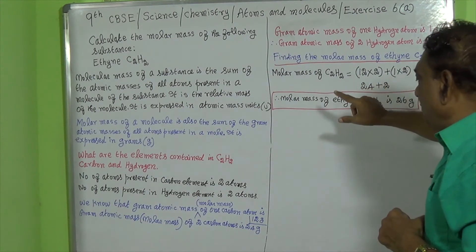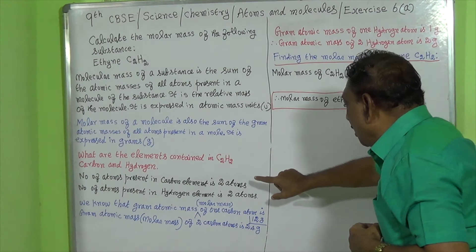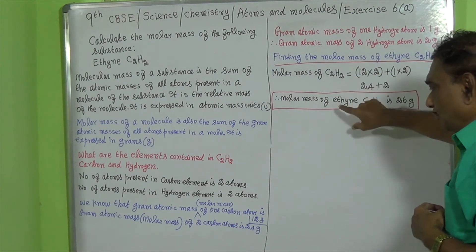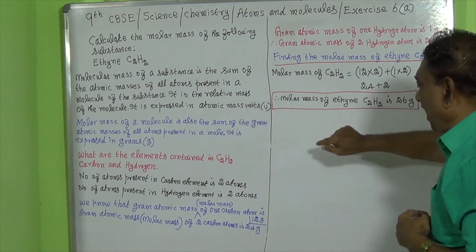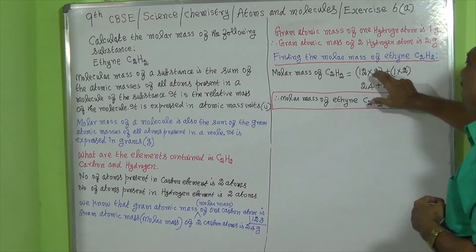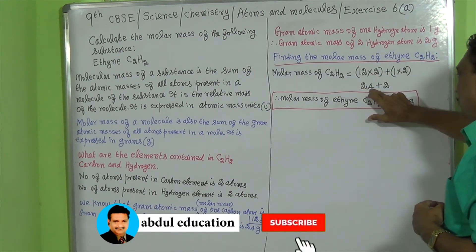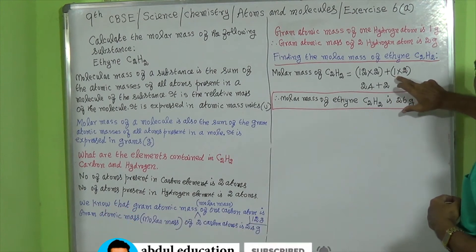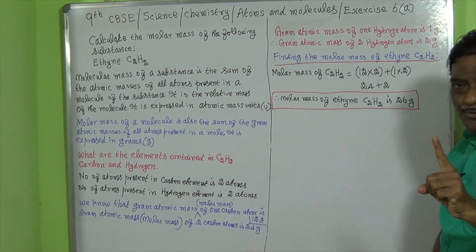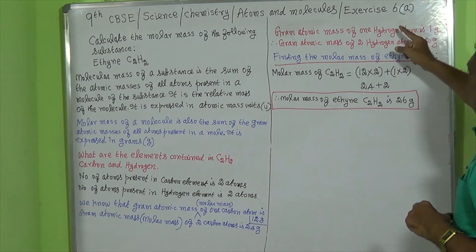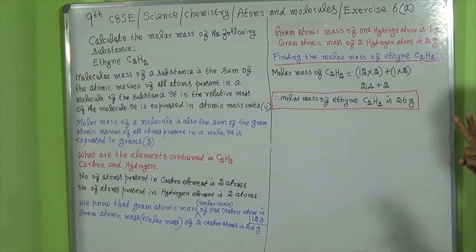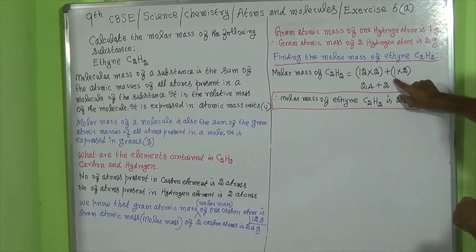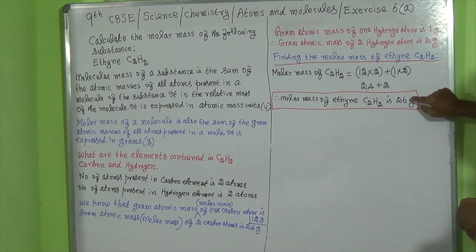What is the gram atomic mass of one carbon atom? It is 12 gram. So therefore, we have to multiply 12 by two. Why? In this case, we have two carbon atoms, so we are multiplying by two. So we will get 24. Then coming to the hydrogen atom, the gram atomic mass of one hydrogen atom is one gram. In this compound there are two hydrogen atoms, so we have to multiply one by two. If we multiply one by two, we will get two. 24 plus two, that is 26 gram.